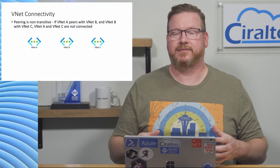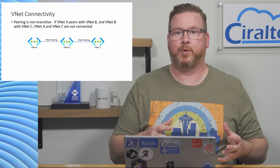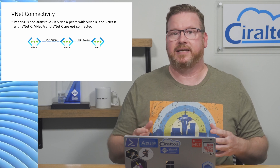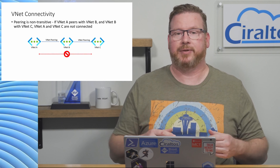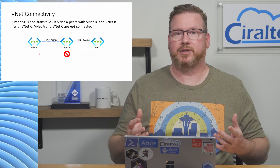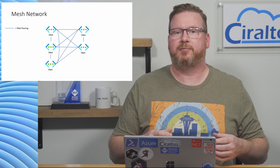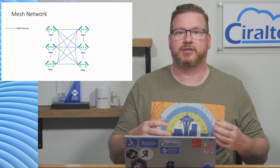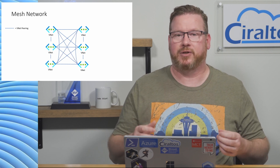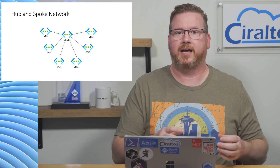We're going to review using a VPN gateway to enable gateway transit in a hub and spoke network. In my last video we talked about how VNet peering is non-transitive — if virtual network A is peered with network B and B to C, network A and C can't communicate. Why not just peer all the virtual networks together for a mesh network? Mesh is fine for small networks, but the number of peerings increases with each additional VNet, so mesh networks don't scale well.